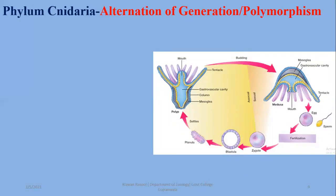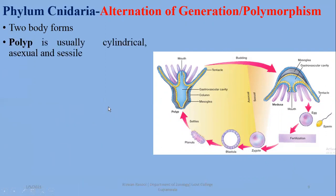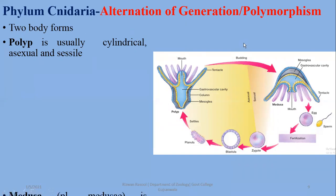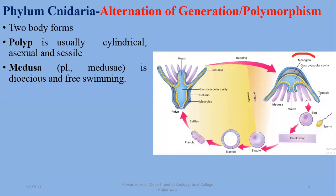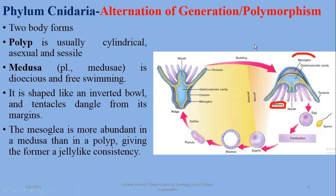The next aspect is the alternation of generation. In Cnidaria, any body form is called a zooid. There are two basic body forms in Cnidarians: the polyp, which is cylindrical in form, non-motile, and usually reproduces asexually; and the medusa, which is umbrella-like, motile, and usually dioecious, reproducing sexually. The medusa is an inverted bowl-like shape and projects its tentacles downward. Mesoglea is more abundant in the medusa than in the polyp, giving the medusa a jelly-like appearance.